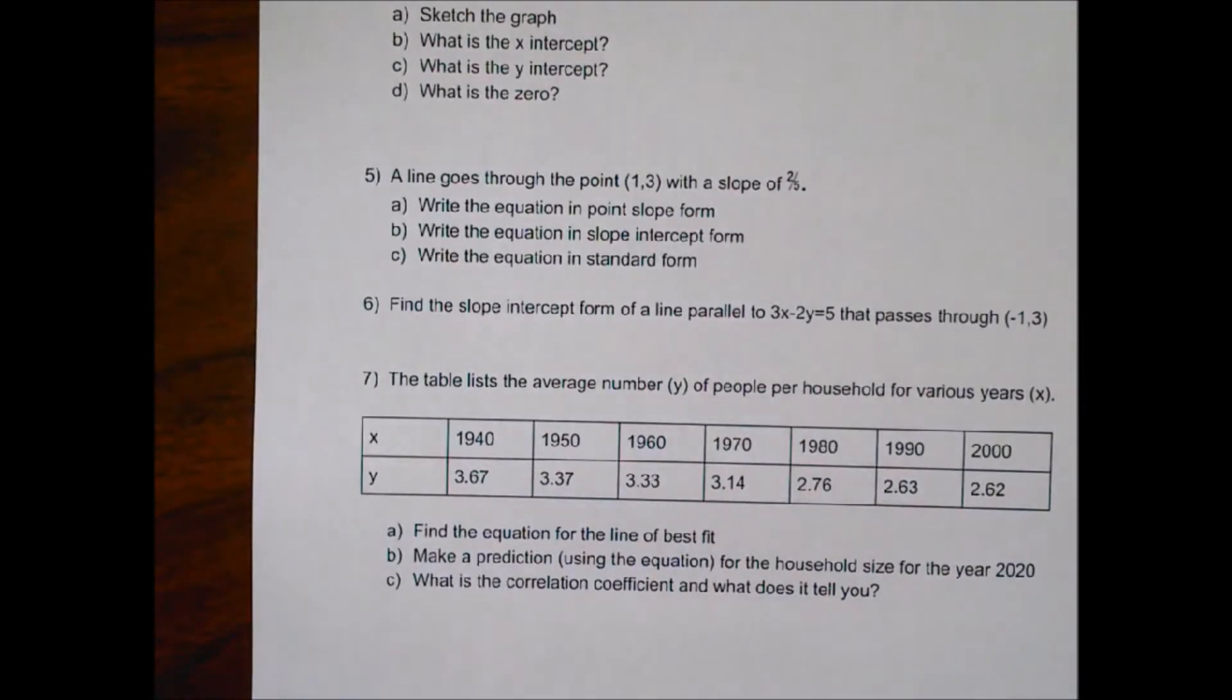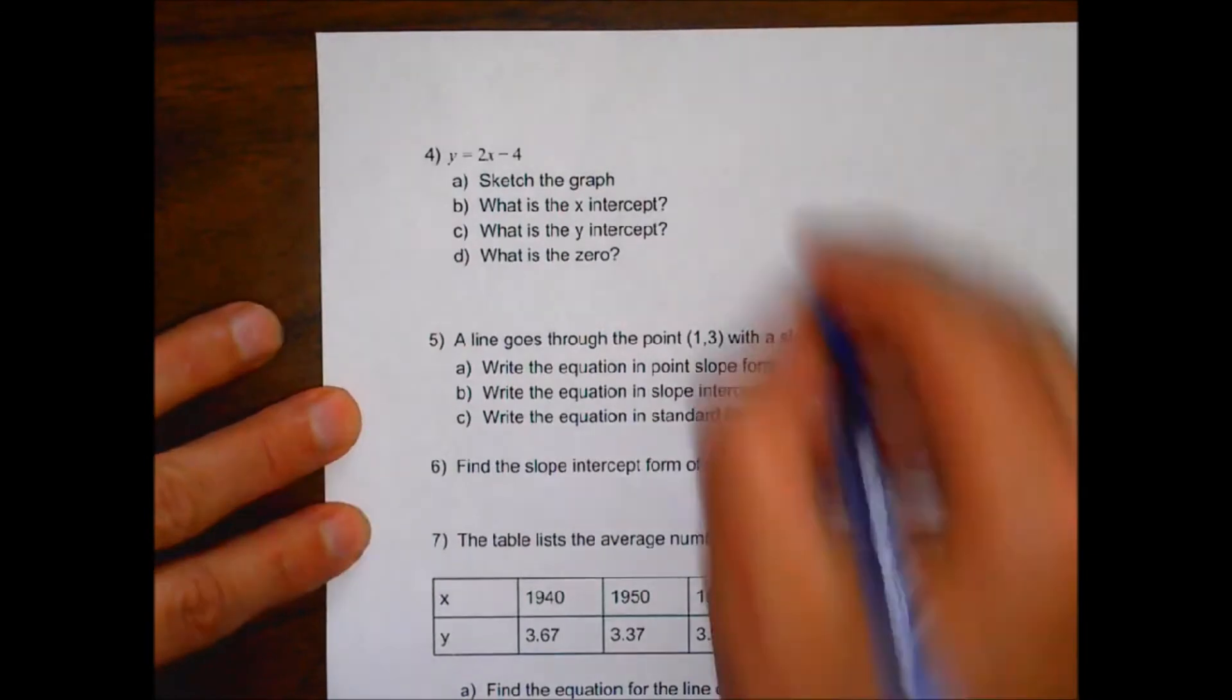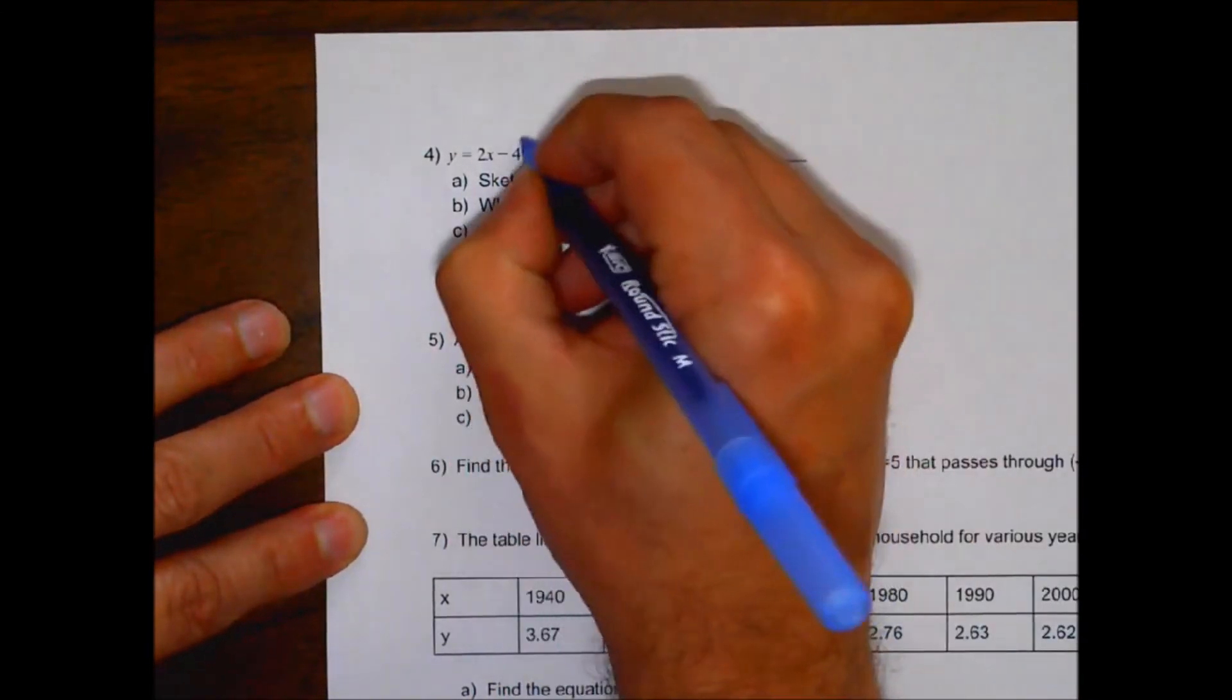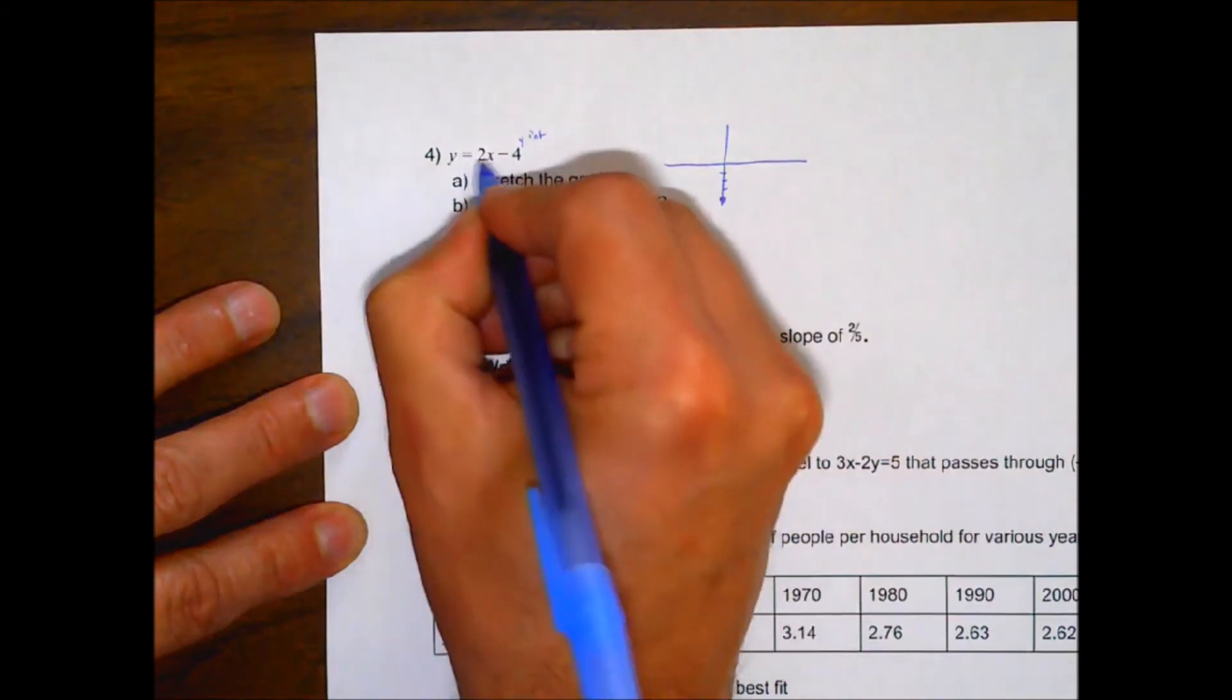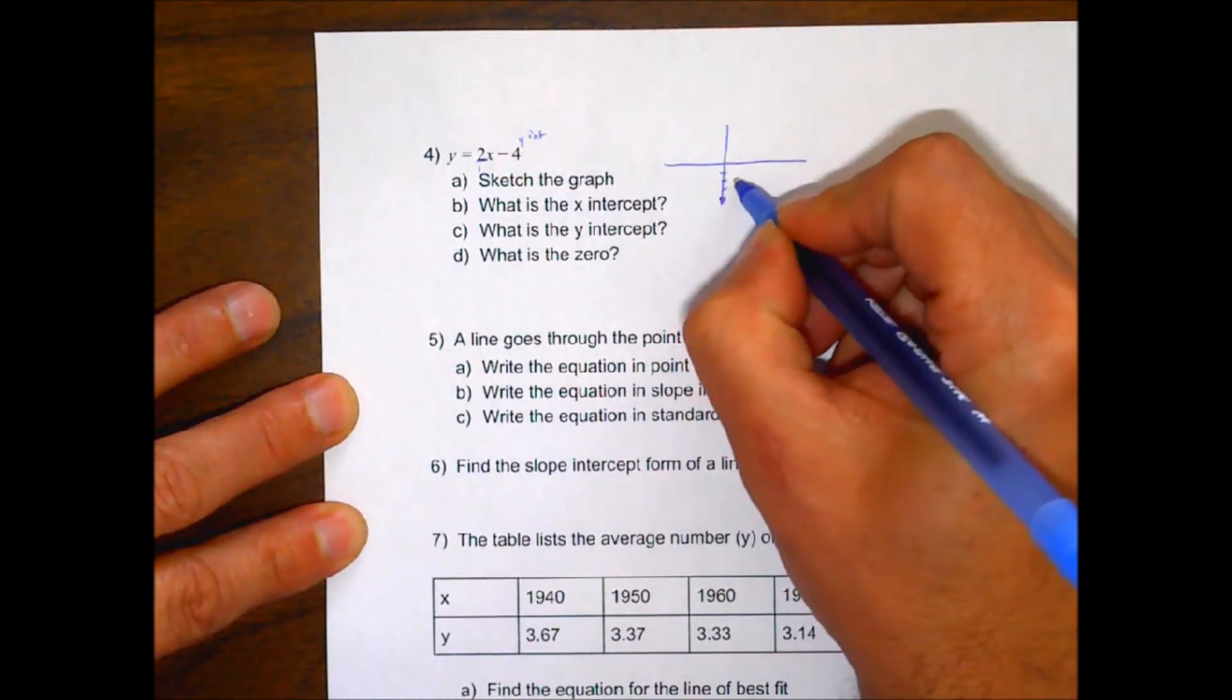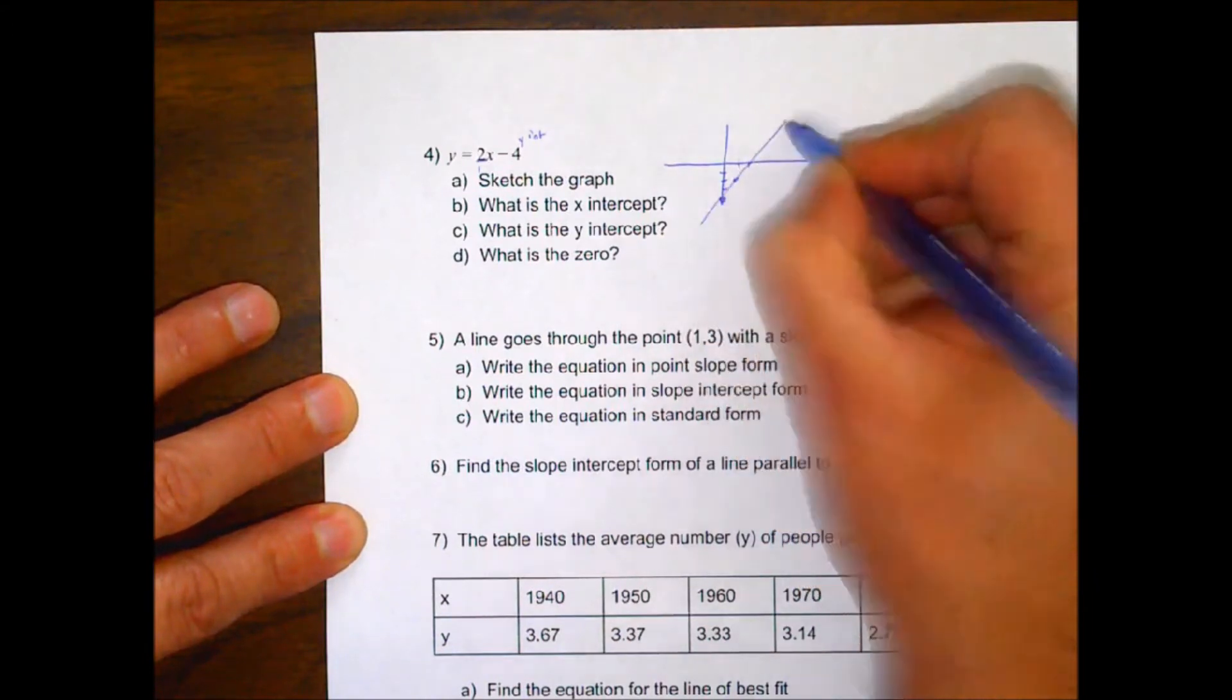Number 4. You want to sketch this graph. To sketch this graph, this is your y-intercept. So negative 4 is your y-intercept where it's crossing your y. And your slope is 2 over 1. So from your y-intercept, it rises 2, runs 1. Rises 2, runs 1. And you have a sketch of your graph there.